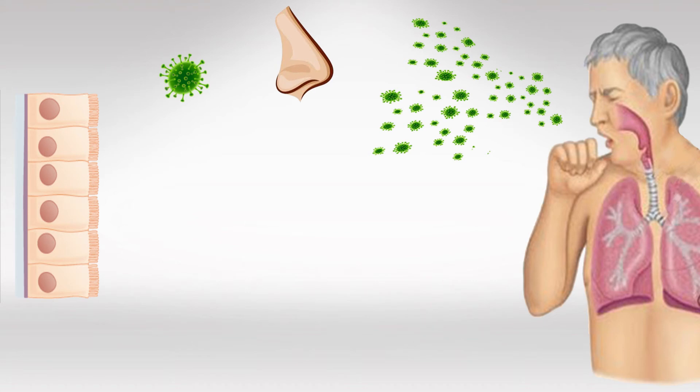Ironically, the mucociliary cells normally prevent respiratory tract infections, and in the case of COVID-19, that's where the infection starts.